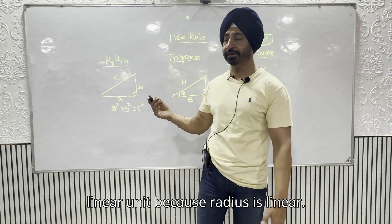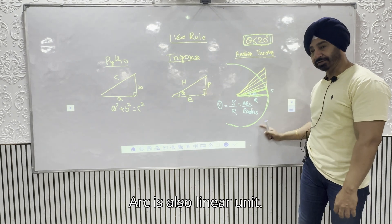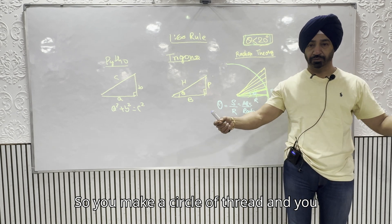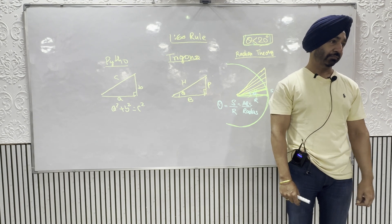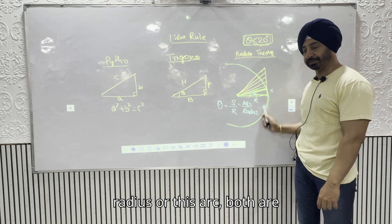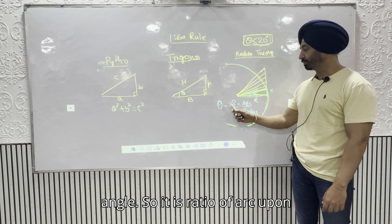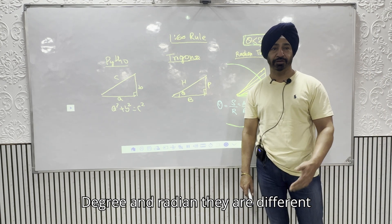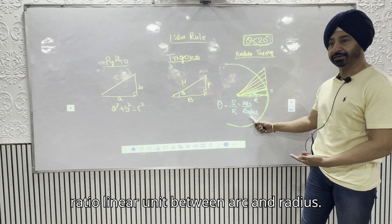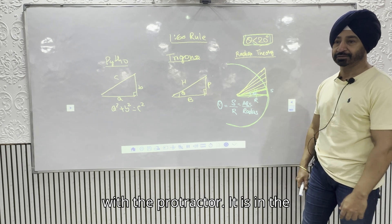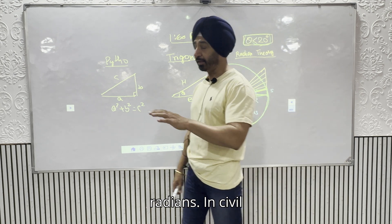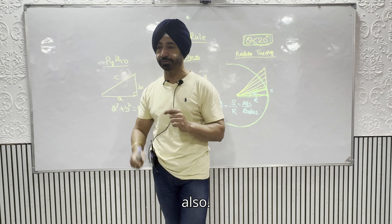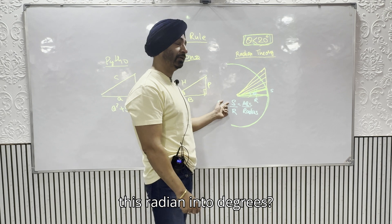The ratio of arc to radius gives a dimensionless result in radians. The arc is a linear unit — like the circumference, given by 2πr. You can open a circle of thread and measure it linearly in metres or centimetres. Both arc and radius are linear units; their ratio gives you theta in radians. In civil aviation we don't typically use radians — we use degrees and gradients — so we need to convert.